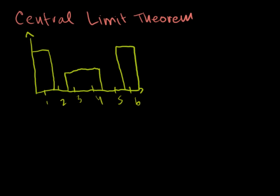If I were to draw a mean — this is symmetric — so maybe the mean would be halfway, so that would be my mean right there. The standard deviation maybe would be that far above and below the mean. But that's my discrete probability distribution function.